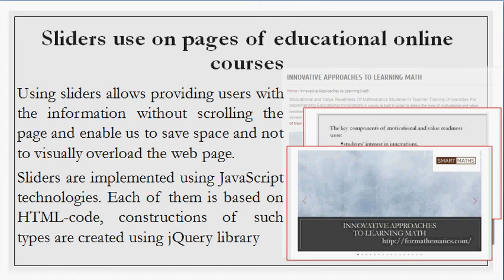Sliders are implemented using JavaScript technologies, each based on HTML code. In most cases, constructions of such types are created using the jQuery library, which includes a significant number of objects to create sliders of different types, forms, and contents. While integrating sliders on the page of the High School Mathematics Teaching platform to represent educational content, we use the manual mode of slider change. Sliders are created using the WordPress Plugin Elementor and are completely adaptive.